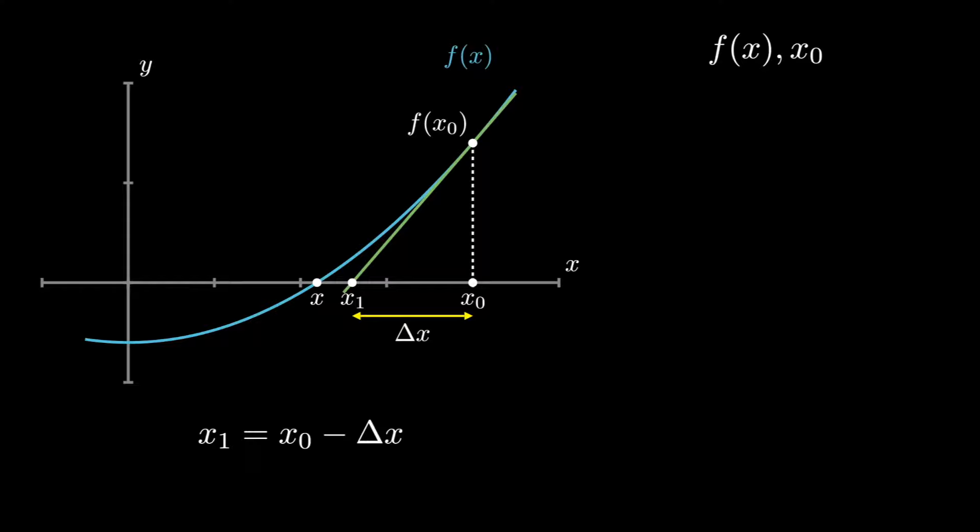We already know x_0. Let's find Δx. We will find Δx using Δy and the slope of the tangent line. Δy is f(x_0) and the slope of the tangent line is Δy by Δx. That is, slope equals to change in y over change in x.